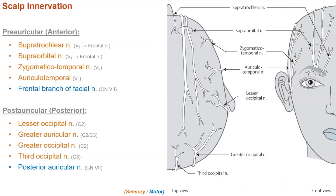We have the zygomatico-temporal nerve, which comes up inferolaterally, branching off of V2, and the auriculotemporal nerve, which is a branch of V3.